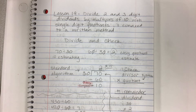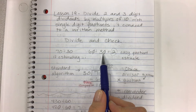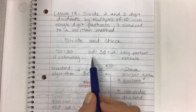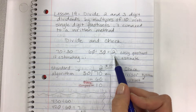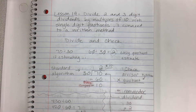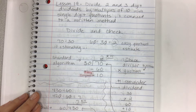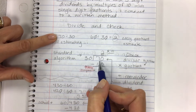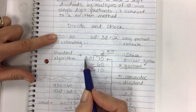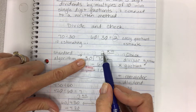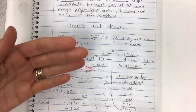Let's start with an easy one: 70 divided by 30. The divisor is already rounded, so we're working with a multiple. The whole point is to figure out what digit goes in the quotient — that's your easy quotient estimate. In the standard algorithm, the dividend goes on the inside, and you break it into groups of 30. How many times does 30 go into 70? Two times.